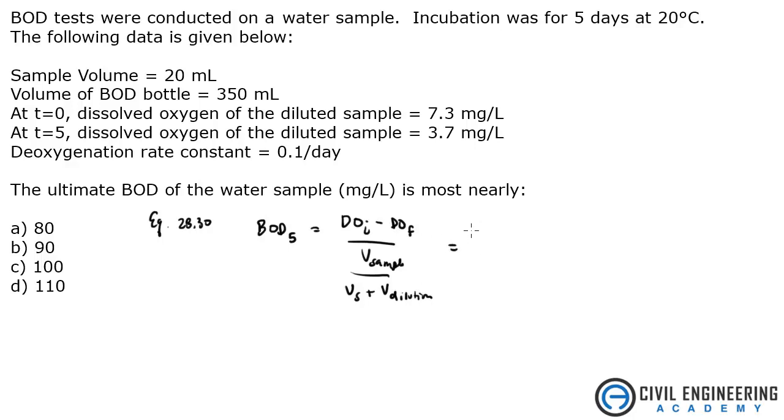So what does that equal? We've got 7.3 which is our dissolved oxygen initial (DOI), minus 3.7 which is our dissolved oxygen final (DOF), all divided by the volume of the sample which is 20 milliliters, divided by the volume of the sample plus the dilution, which is basically the volume of the whole bottle, 350. Because you're taking the sample and adding water to it, and you can only fill up what the bottle is, so it's 350.